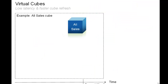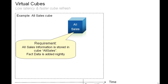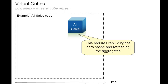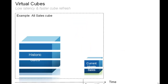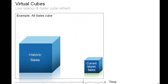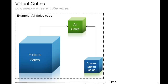Here is an example of a virtual cube used for faster cube refresh. All sales information is stored in Cube All Sales, and data is added nightly. This requires rebuilding the data cache and refreshing the aggregates. Partition the All Sales cube into two cubes — historic sales and current month sales — and define a virtual cube to join the two. Historic sales records historical data and current month sales records daily information.